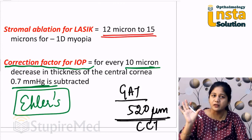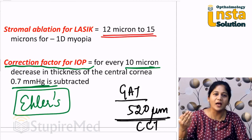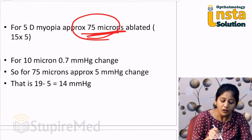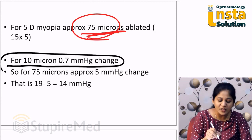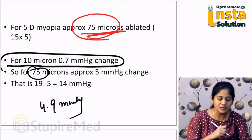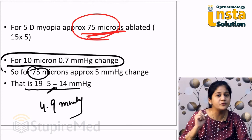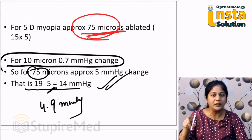When your central corneal thickness goes down, there will be a change in the measured IOP. For 10 microns we have a change of 0.7 mmHg, so for 75 microns the change would be approximately 4.9 mmHg. Therefore, you subtract approximately 4.9 or 5 from 19, which comes out to be 14 mmHg. The measured IOP on Goldman Applanation Tonometer will be lower — approximately 5 mmHg less than the actual IOP.